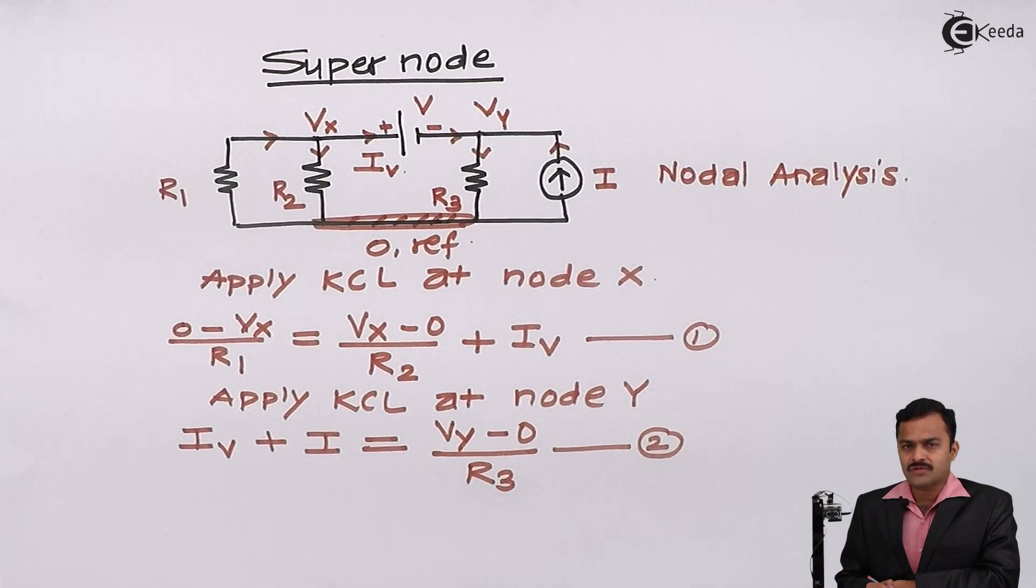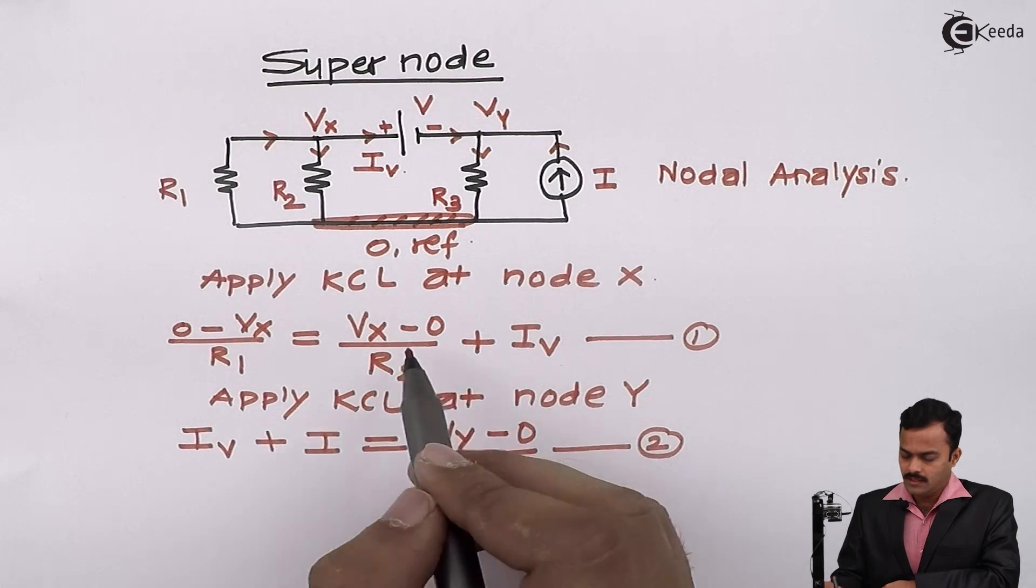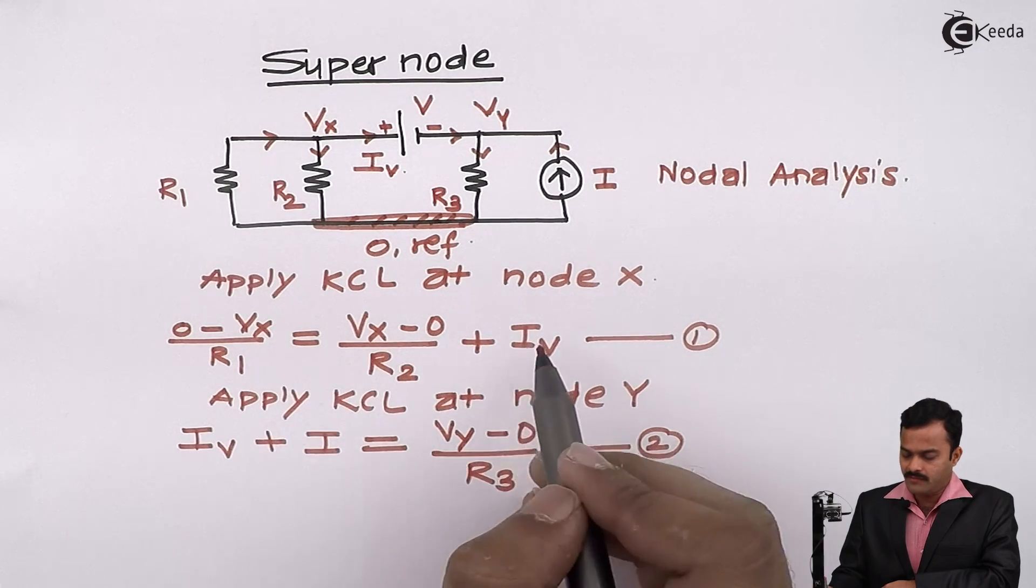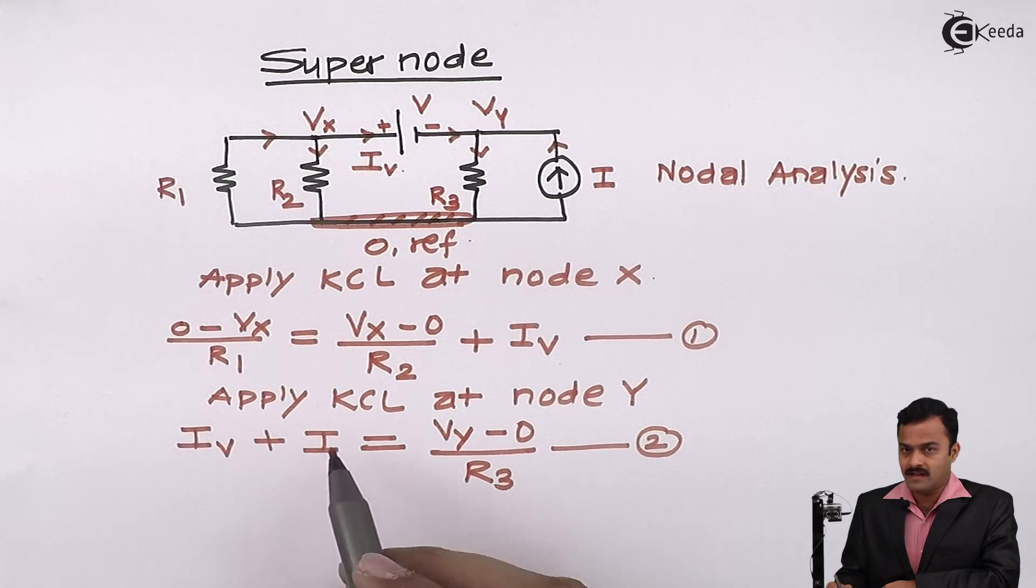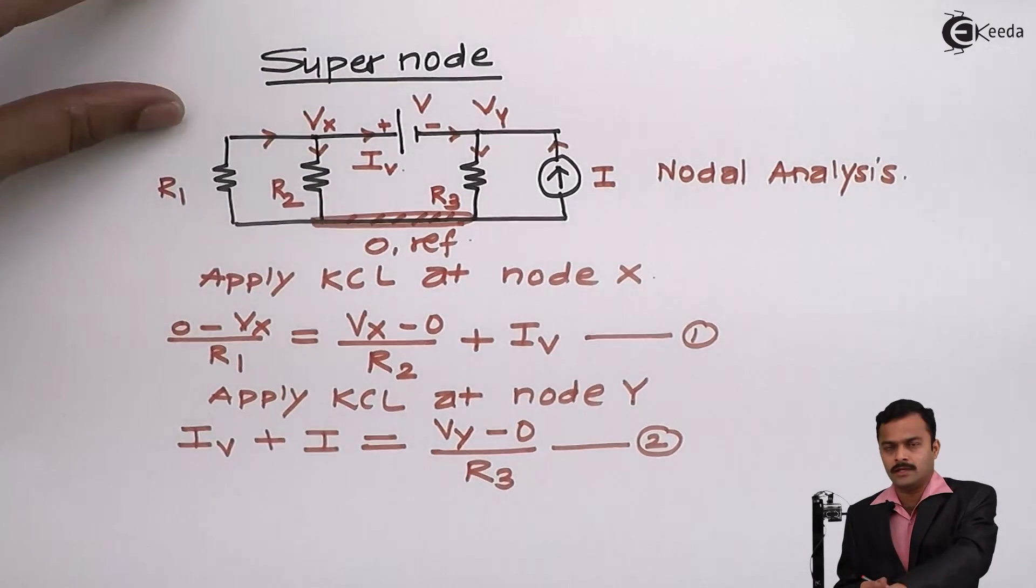Remember, we have solved numericals where I am getting the equations in terms of node voltages only. So here along with the node voltages, I am having this IV term extra. I is a constant, so that is not a problem. So I need to eliminate this IV. So see how I am going to eliminate IV.